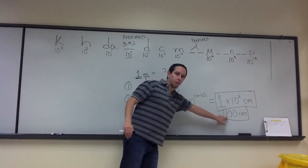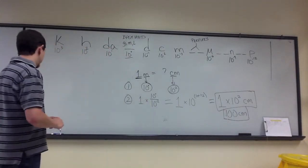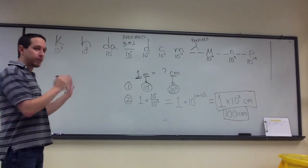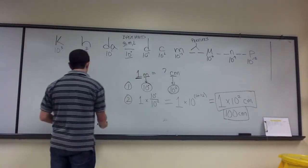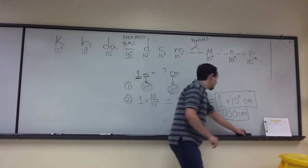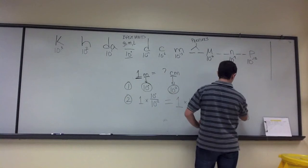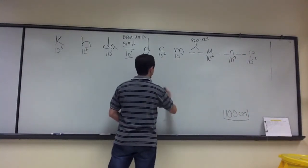So, this is the answer we're looking for. This is the correct answer. There are 100 centimeters in 1 meter. So, now what I'm going to show you is I'm going to show you how you can do this visually in case you're not as comfortable with math as you'd like to be. So, I'm going to leave up the 100 centimeters because that's where we know we're going. And I'll show you that what I'm going to do now is still going to give you the exact same answer.